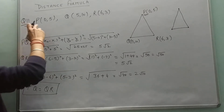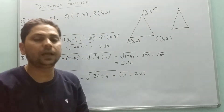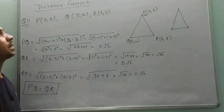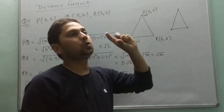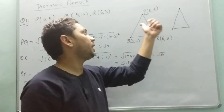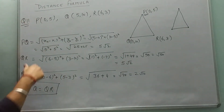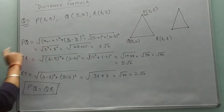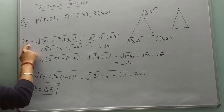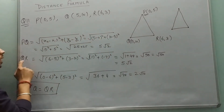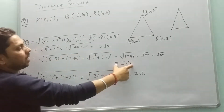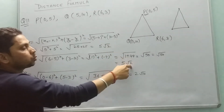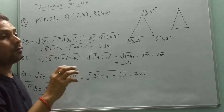We have to prove that PQR is an isosceles triangle. The property of an isosceles triangle is that two sides are equal. So we need to find the distances PQ, QR, and RP using the distance formula and check whether any two sides are equal.